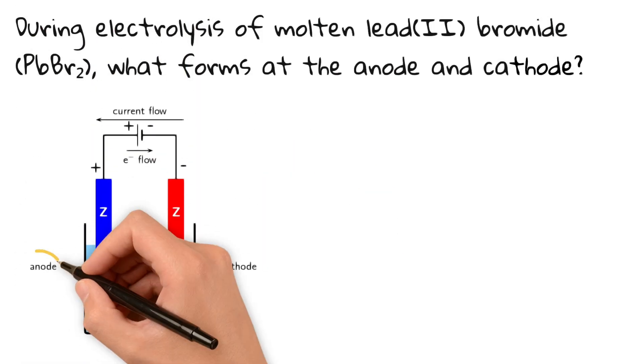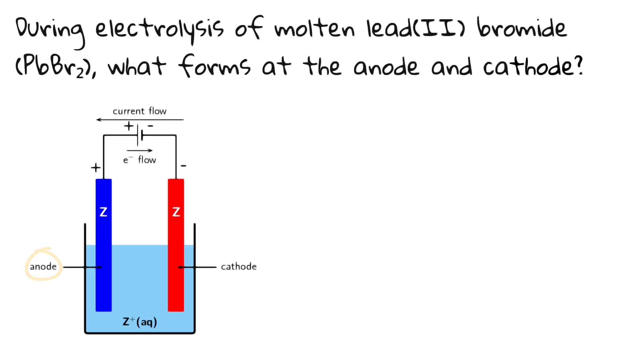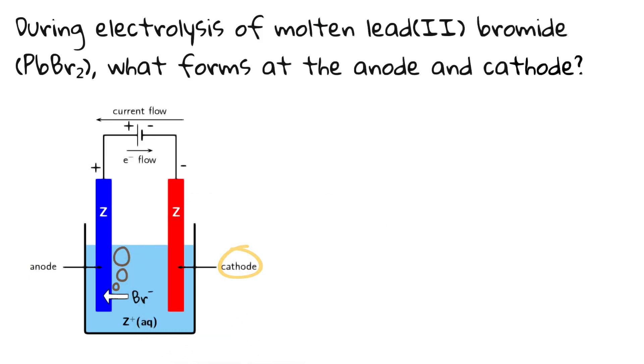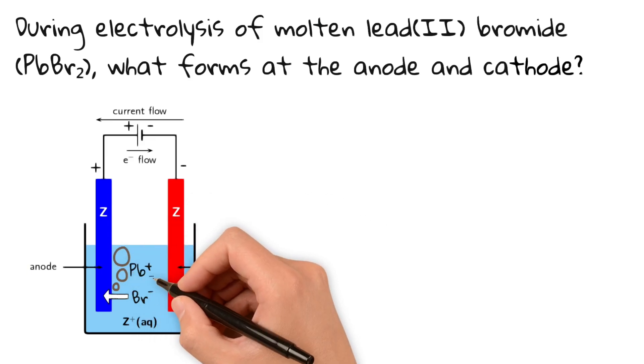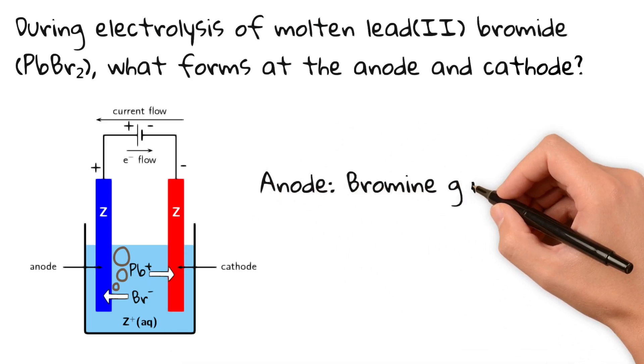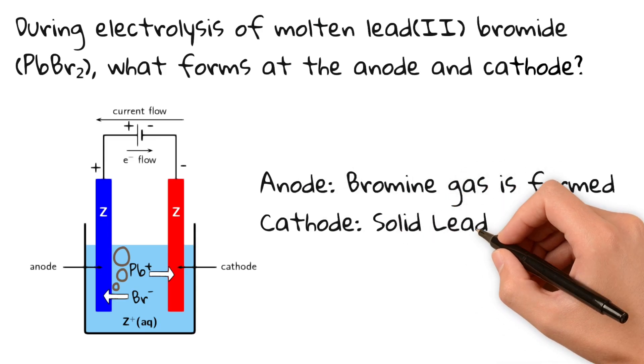The anode, which is the positive electrode, attracts negative ions. So Br- is attracted and bromine gas is formed. The cathode on the other hand is negative and therefore attracts positive lead ions. So the final answer is anode: bromine gas is formed. Cathode: lead metal is formed.